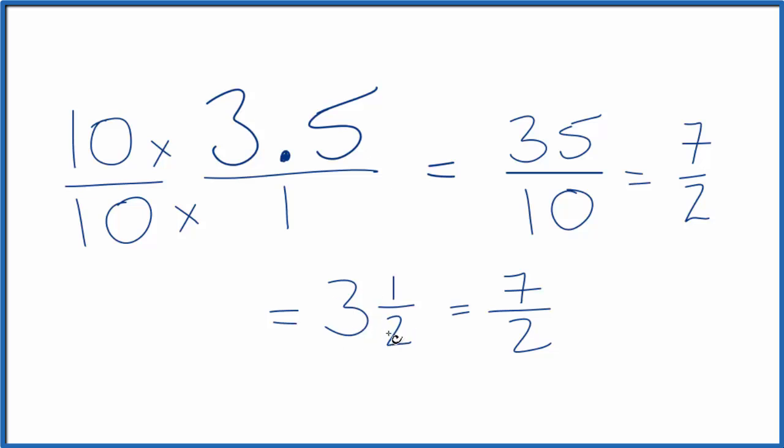So either one of these would be a fraction representing 3.5. If you divided 1 by 2, and then you add it to 3, you'd have 3.5. If you divide 7 by 2, you would get 3.5. These are equal to 3.5. This is Dr. B, expressing 3.5 as a fraction. Thanks for watching.